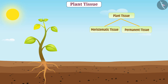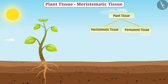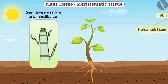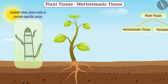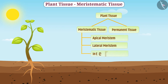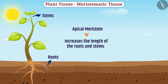On the basis of division capacity of plant tissue, plant tissues are classified into meristematic tissue and permanent tissue. The tissues of plants whose cells are actively dividing throughout their life are called dividing tissue, also called meristematic tissue. In plants, meristematic tissues are found in certain specific areas, and plant growth takes place only in those specific areas. The function of meristematic tissue is to grow plants. On the basis of the area where meristematic tissue is present, it is classified into apical meristem, lateral meristem, and intercalary meristem. The apical meristem is present in the growth part of roots and stems and increases the length of the roots and stems.